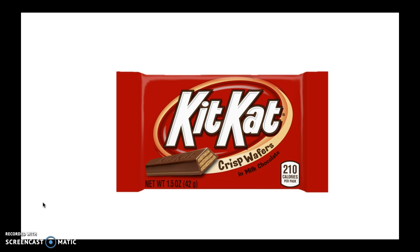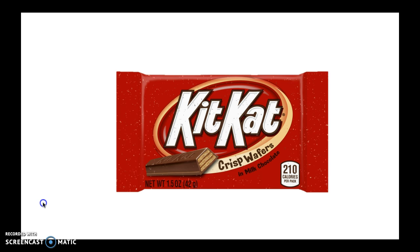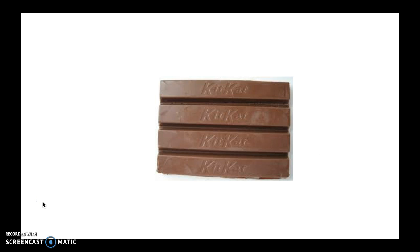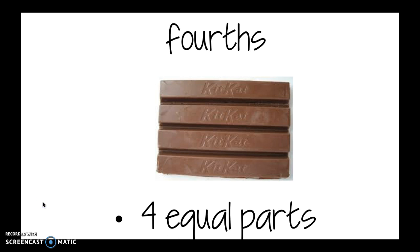All right. The great thing about Kit Kats is that they use fourths in their Kit Kats because they have a big candy bar that's divided into fourths. All right. Fourths have four equal parts. If you'll notice, each part of the Kit Kats is four pieces and they're all equal parts. So let's check ourselves and see if we can see if different things have been cut into fourths.